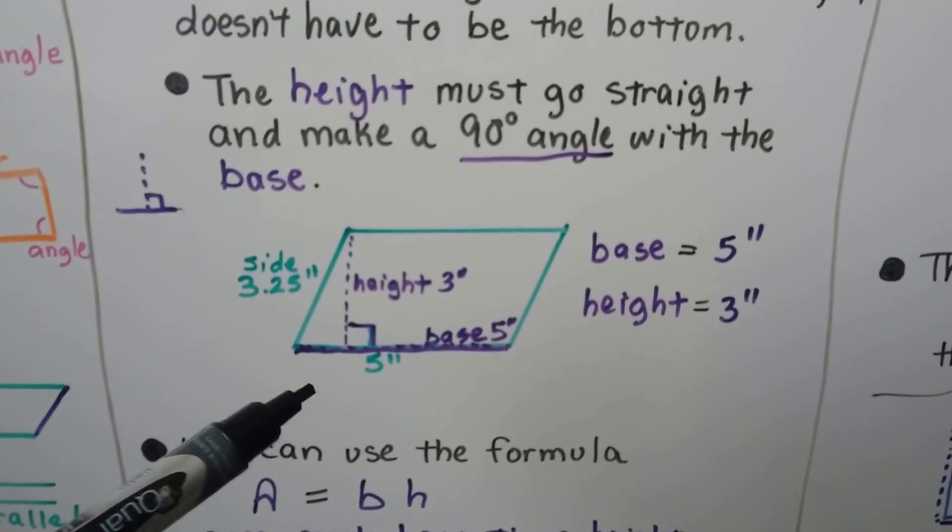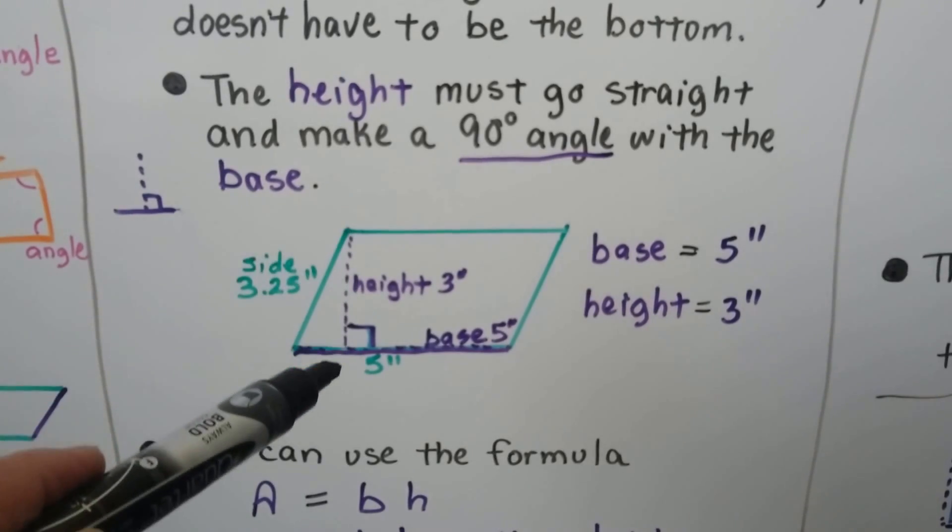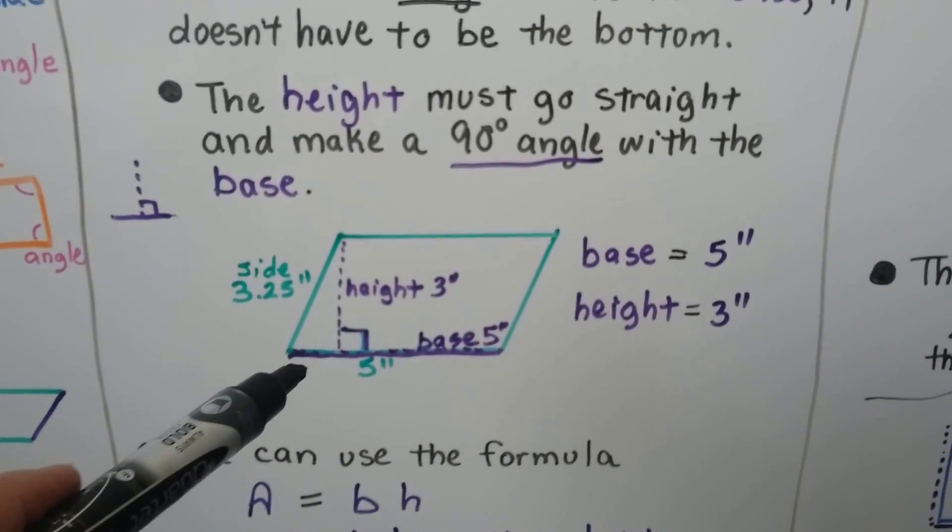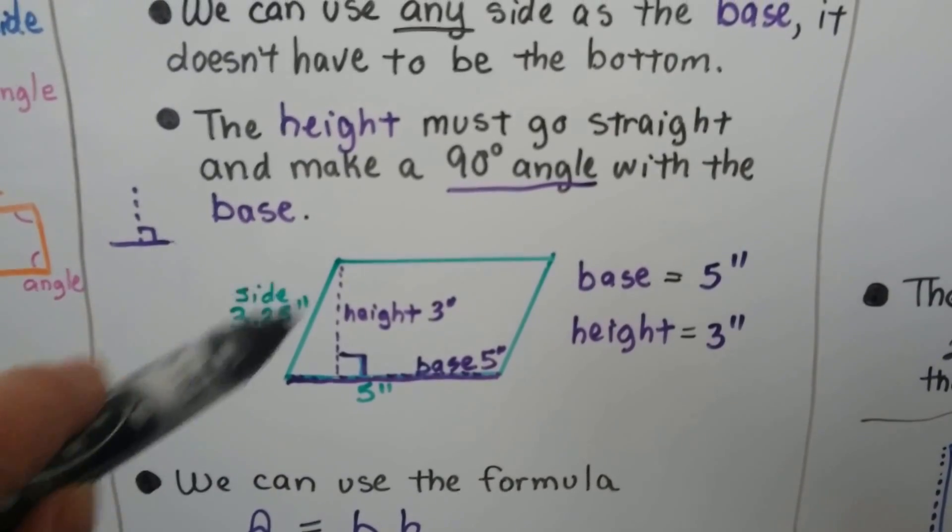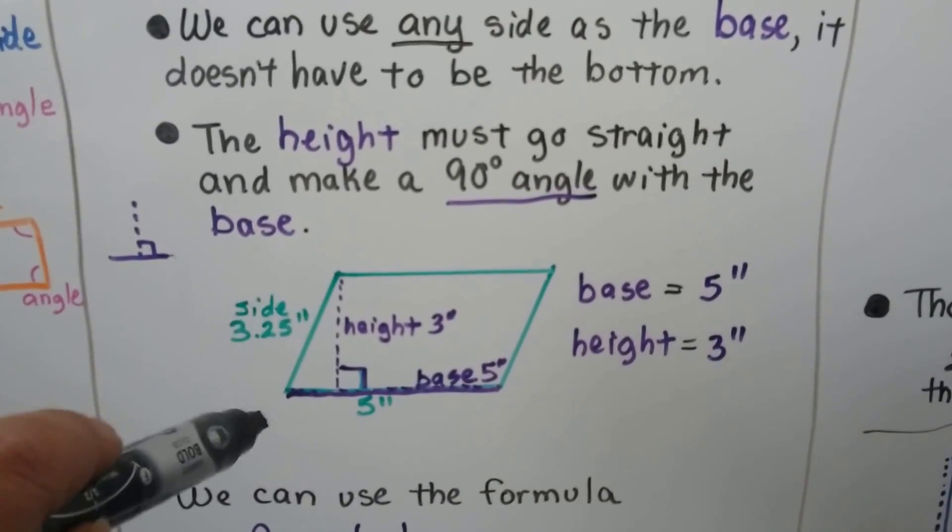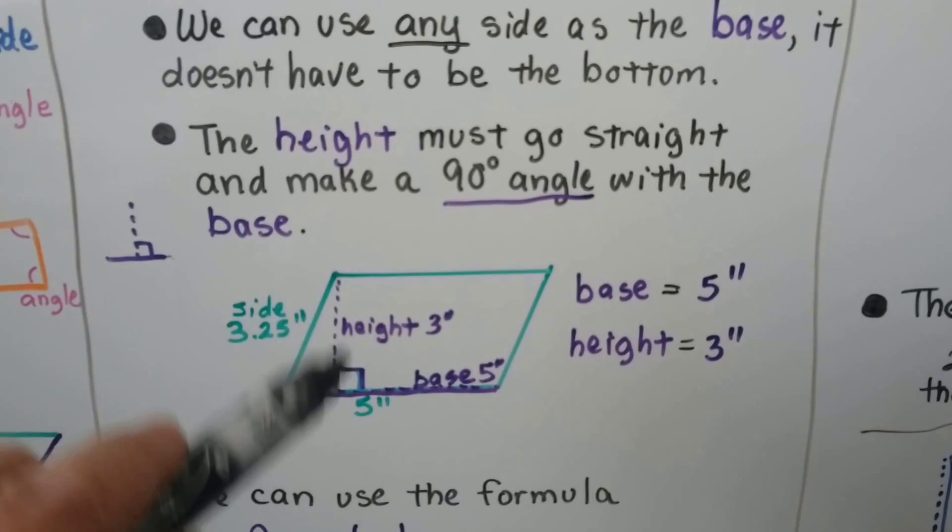For this parallelogram, it says the height is three inches and the base is five inches. Its slant height is 3.25. A slanted line will end up being longer than the height. See? A slanted side length.